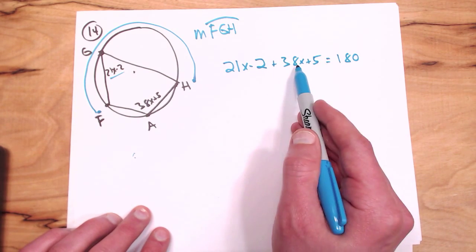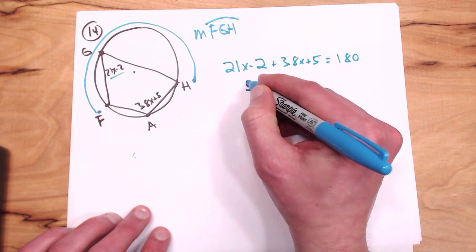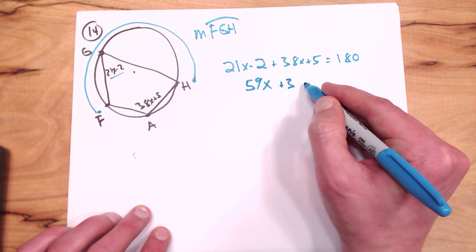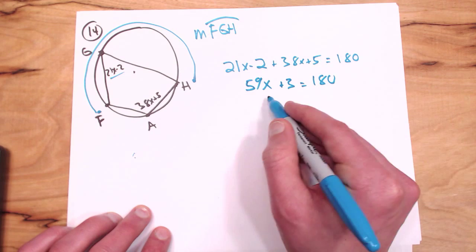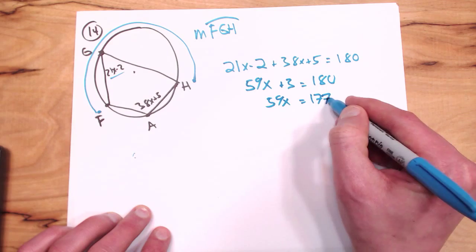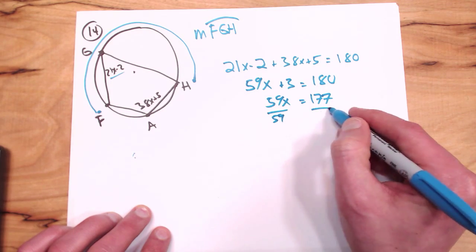All right, so now it's just algebra time. So 21 plus 38 is 59X. 5 minus 2 is 3, equals 180. I'll subtract 3 from both sides. So 59X equals 177. I'll divide both sides by 59.